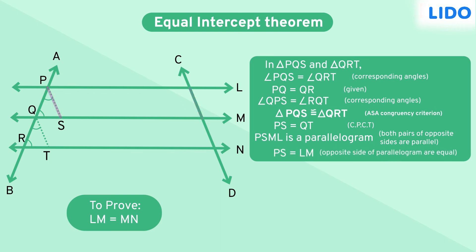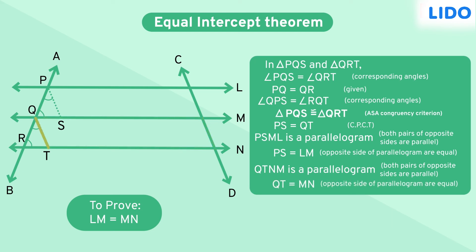Similarly, with sides QT and MN being parallel, quadrilateral QTNM becomes a parallelogram. Since opposite sides of a parallelogram are equal, QT and MN are equal.